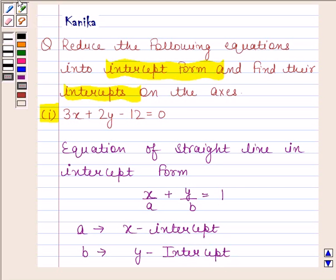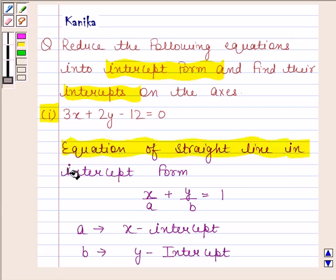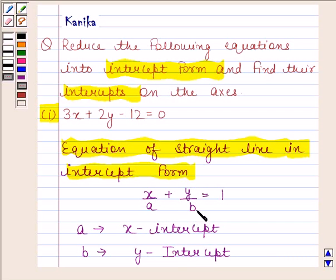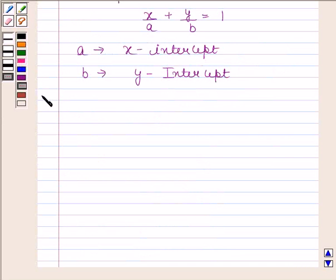So always remember that equation of straight line in intercept form is x/a plus y/b is equal to 1 where a is the x-intercept and b is the y-intercept. Let us now begin with the solution.